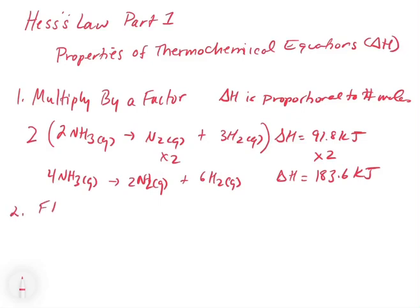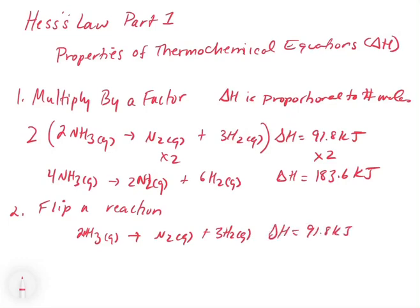What happens if we flip a reaction? For example, we take our 2NH3 gas goes to N2 gas plus 3H2 gas. Delta H is still 91.8 kilojoules. Now I want to multiply this through by minus 1 or flip it.